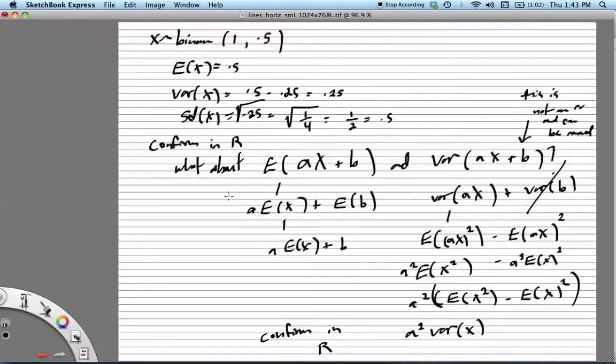For expected value, it's a pretty simple thing to do because we know some rules. We can distribute expected value and we can take out a constant. So we get the result that a times the expected value of X plus b will give us our new mean for this transformed random variable.